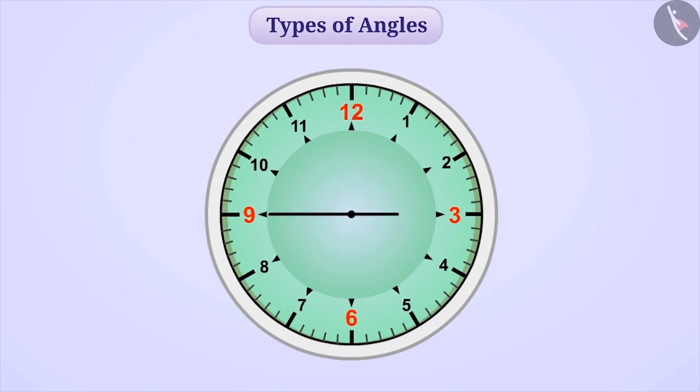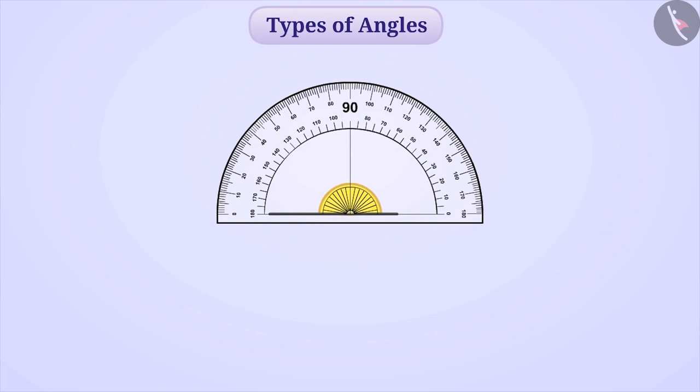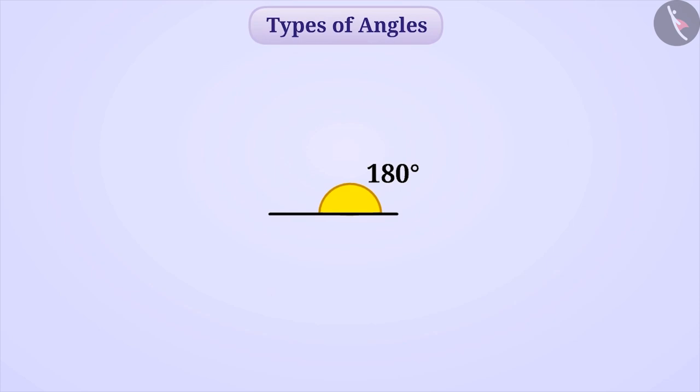Now look here. Here, both hands of the clock are in opposite directions. We can say that both hands of the clock are in one line. In such a situation, if we take the measurement of the angle formed by both hands, we get 180 degrees.